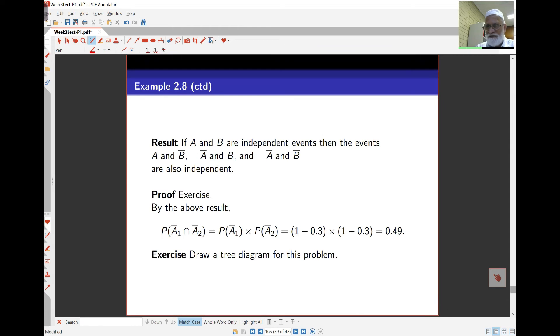Now, it turns out that if A and B are independent, then any combination of A and B with complements also are independent. And you can show that. I won't show that here. Those interested can ask me afterwards. But by using the result, then probability of A1 complement intersect A2 complement is probability of A1 complement times probability of A2 complement. And that's 1 minus 0.3 times 1 minus 0.3, which is 0.49.